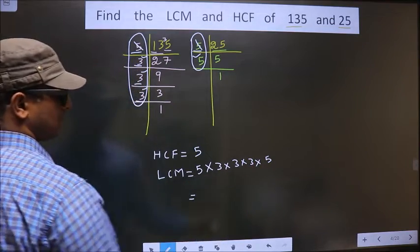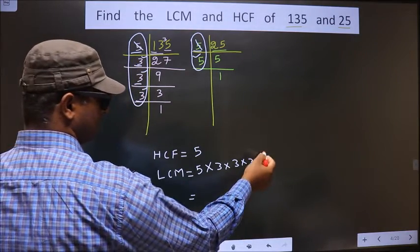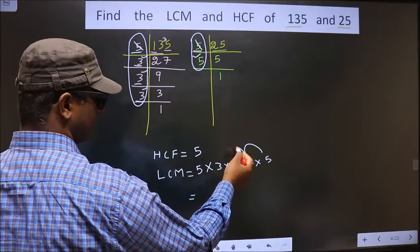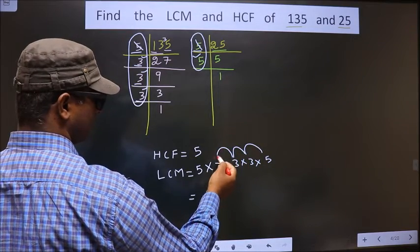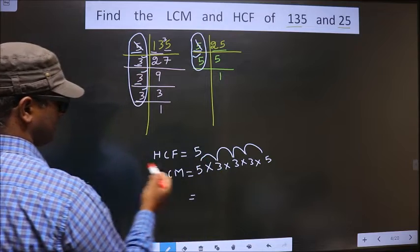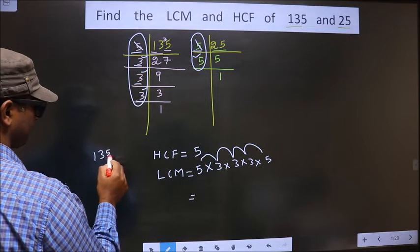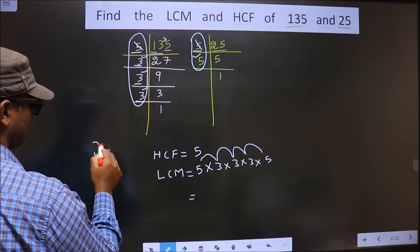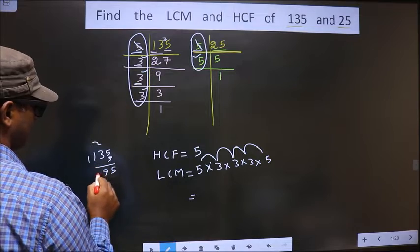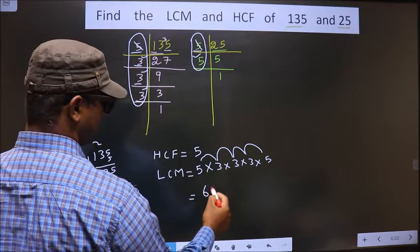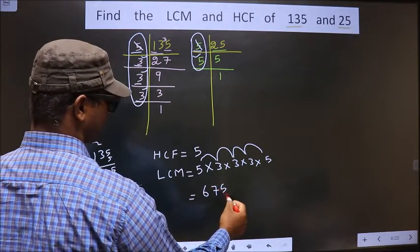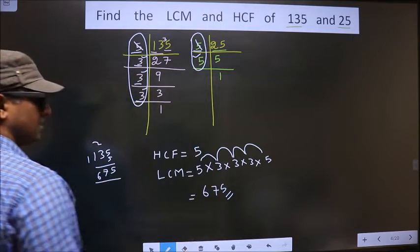Now, let us multiply all this. 5 times 3 is 15. 15 times 3 is 45. 45 into 3 is 135. 135 into 5. 5 times 5 is 25. 5 times 3 is 15. We get 675. So, this is our LCM and this is our HCF.